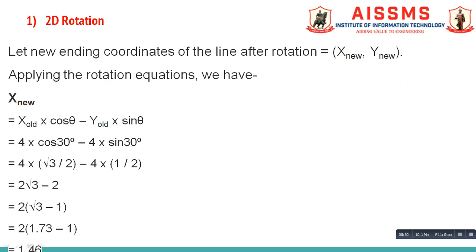Also value of Y_old and rotation angle is given to us in our problem statement. Y_old is equal to 4 and rotation angle is 30 degrees. So after substituting we get this equation. And after solving this equation the value that we get for X_new is 1.46.